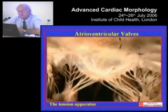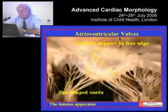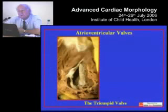If we open the valve, we can very nicely see these component parts, and we can see that in the normal atrioventricular valve there is uniform support of the tendinous cords to the free edge of the valvar leaflets. And at the ends of the solitary zone of apposition, we have these so-called fan-shaped cords, which some have used to define commissures.